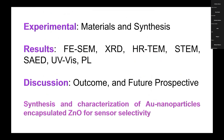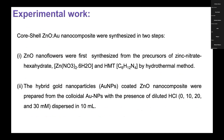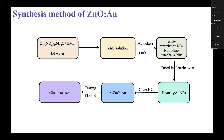Now my experimental work. The material and synthesis use FSM, XRD, HRTEM, STEM, and SAED. My topic is synthesis and characterization of Au nanoparticle-encapsulated zinc oxide for sensor selectivity. Core-shell ZnO-Au nanocomposites were synthesized in two steps: first, zinc oxide nanoflowers were synthesized from precursors zinc nitrate hexahydrate and HMTA by the hydrothermal method; secondly, hybrid gold nanoparticle-coated zinc oxide nanocomposites were prepared from colloidal Au nanoparticles with diluted HCl concentration from 0 to 30 millimolar, dispersed into 10 mL.